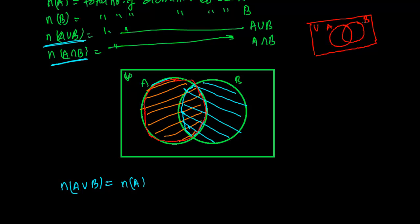If this is my A and this is my B, then to find the cardinal number, I am first taking all the elements from region A, then I am adding all the elements from region B as well. But while taking these, I need the complete region of A and B. However, this overlapping region has been counted twice, so I have to subtract it once. That's why I am subtracting A intersection B because it has been repeated twice, and now I get my complete region.